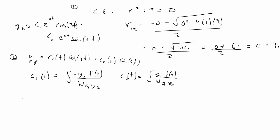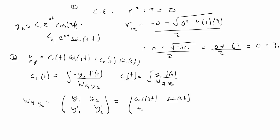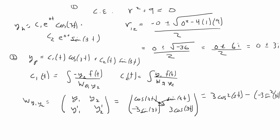First, we compute the Wronskian of y1 and y2, which is the determinant of the 2×2 matrix [y1, y2; y1', y2']. With y1 = cos(3t) and y2 = sin(3t), the derivatives are y1' = −3·sin(3t) and y2' = 3·cos(3t). The determinant gives 3·cos²(3t) + 3·sin²(3t) = 3, since cos² + sin² = 1. So the Wronskian is 3.